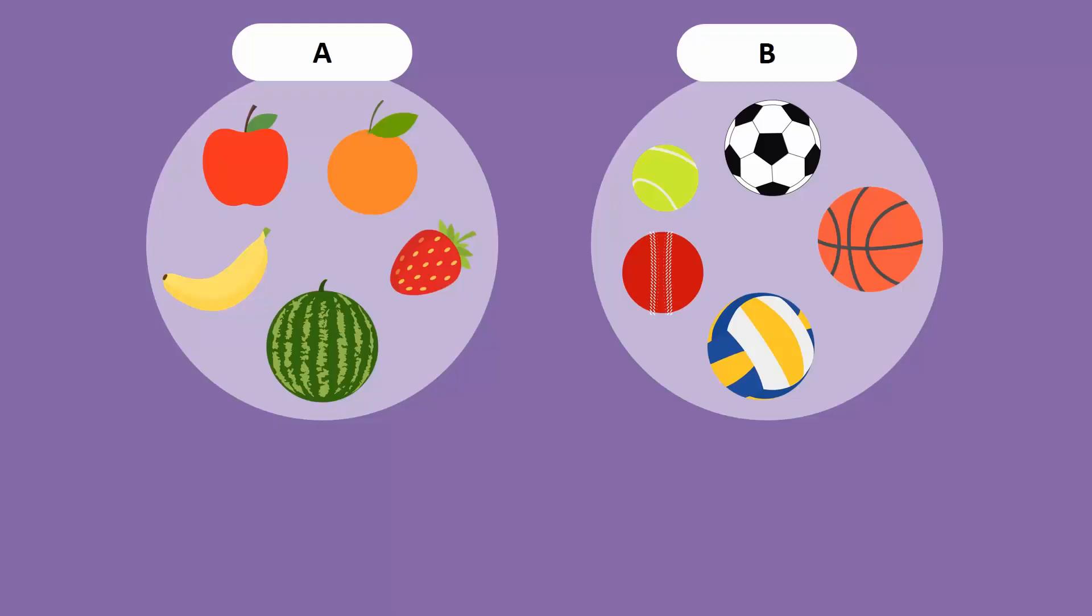Consider these two sets. Set A contains fruits, while set B contains balls. Do they have the same number of elements?